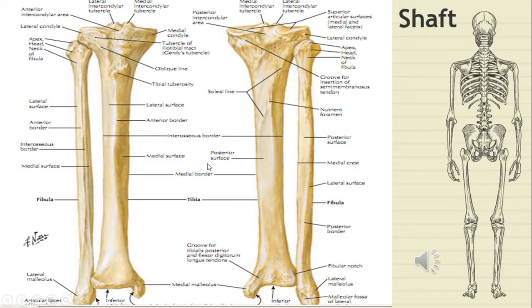To determine the side of fibula: keep the expanded upper end superiorly with the styloid process projecting posteriorly and laterally, then place the lateral malleolus downwards such that the lateral surface is rough and subcutaneous, and the medial surface has the articular facet anteriorly and the malleolar fossa posteriorly. Using this method, the diagram shown here is identified as the fibula of the right side.